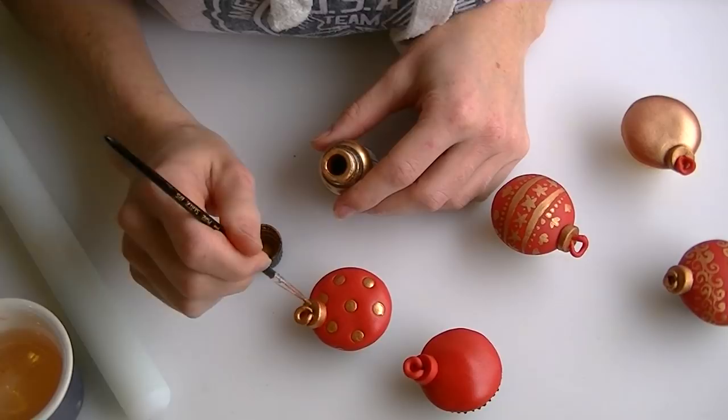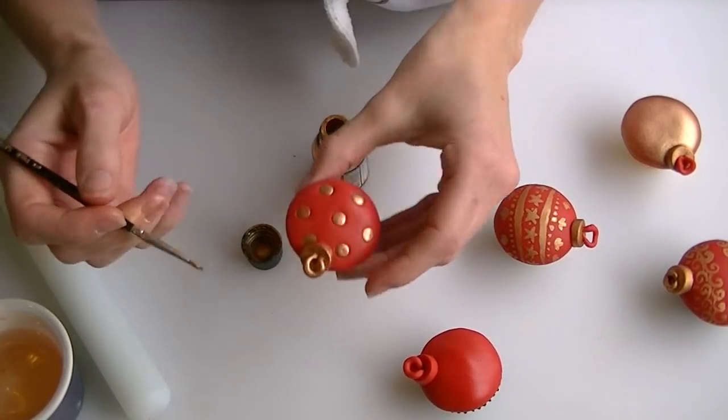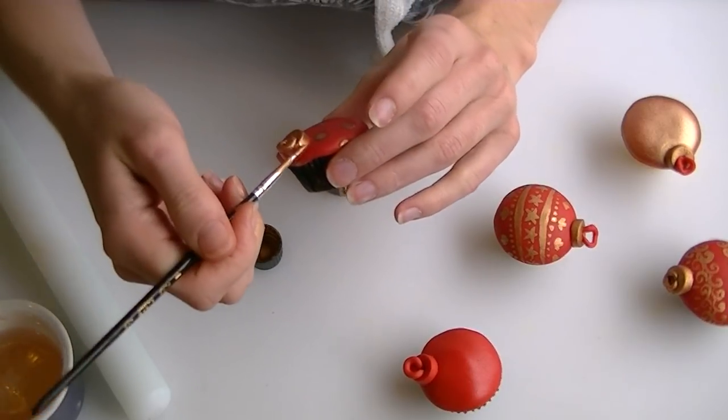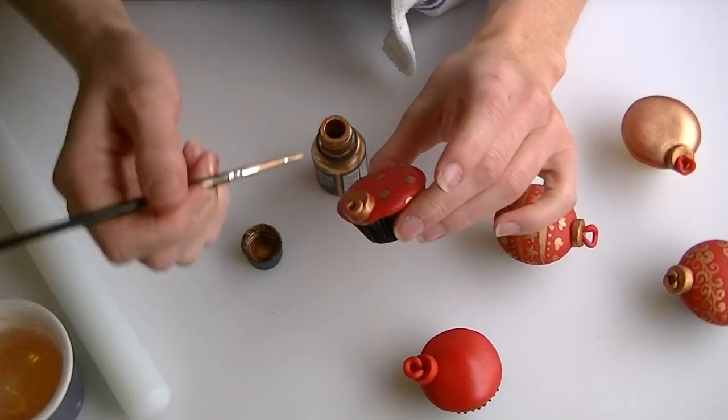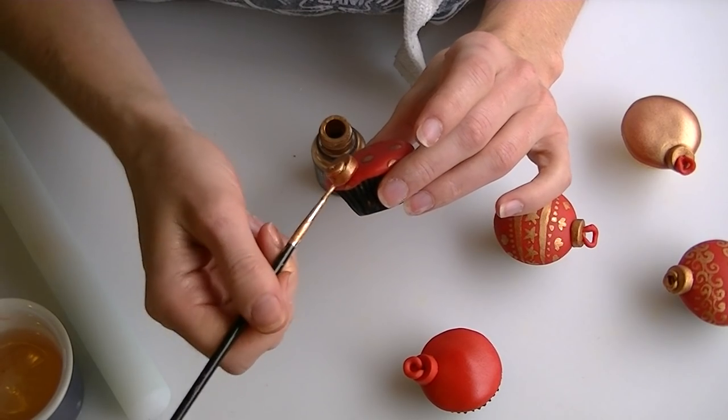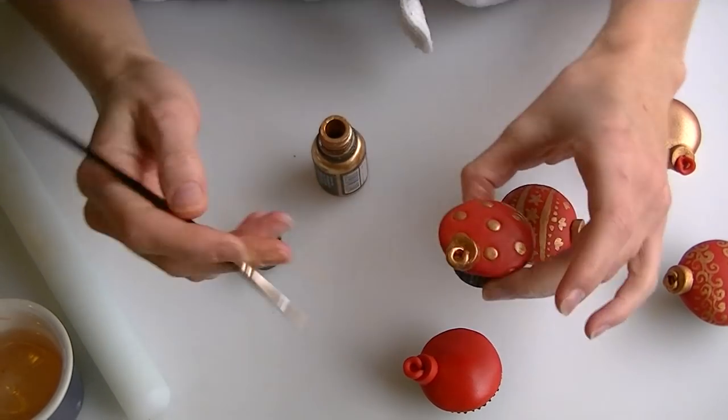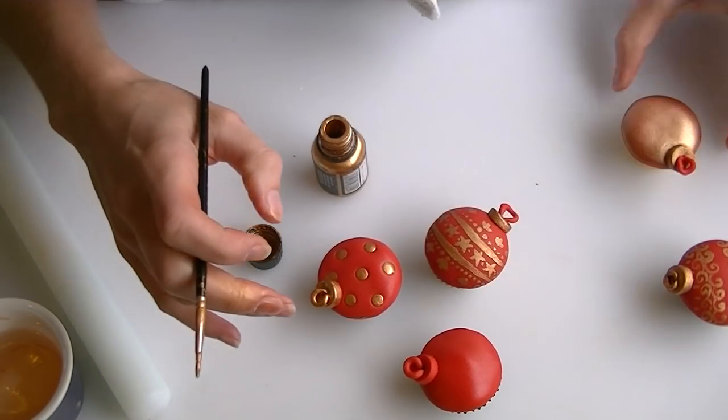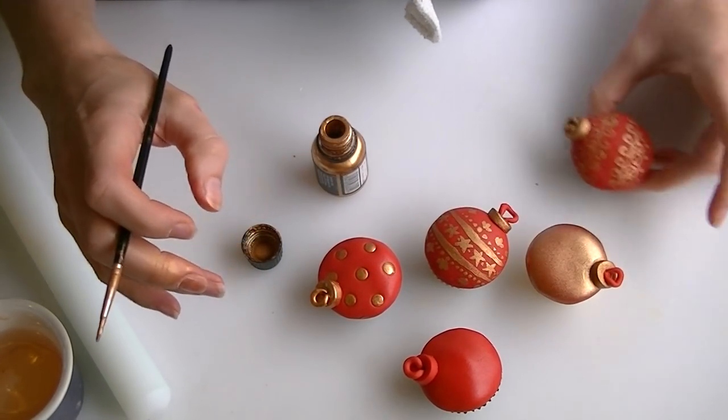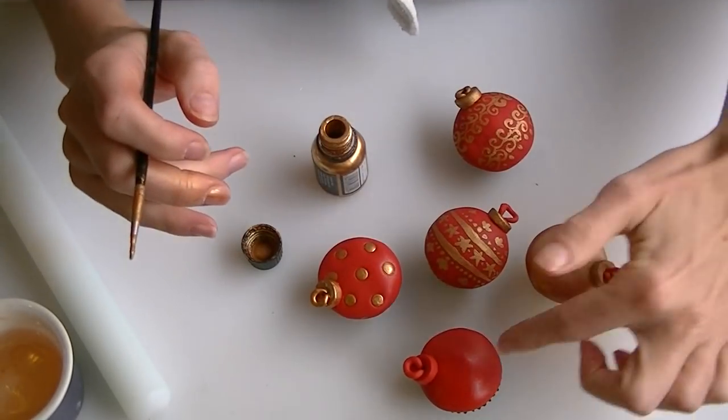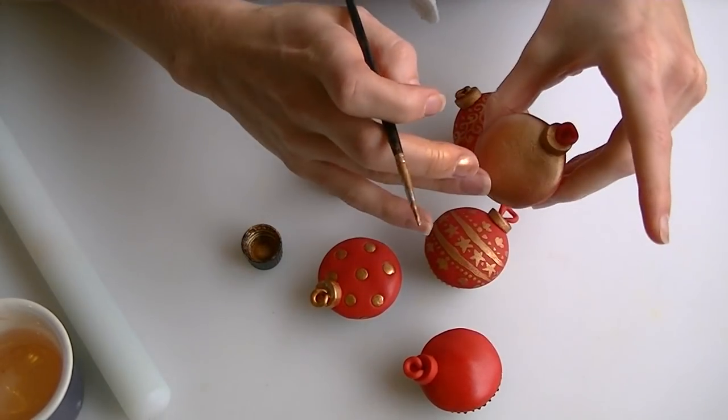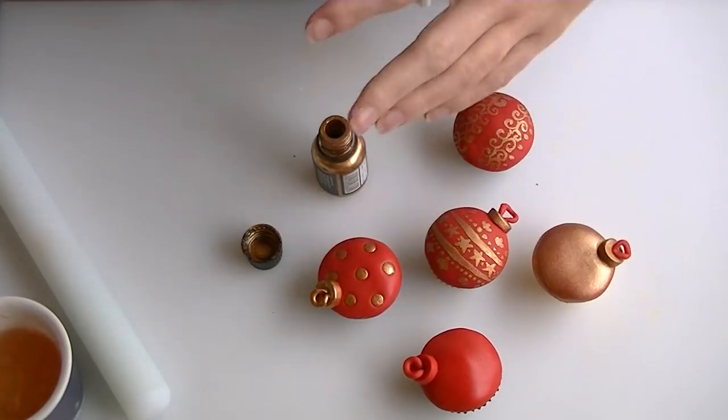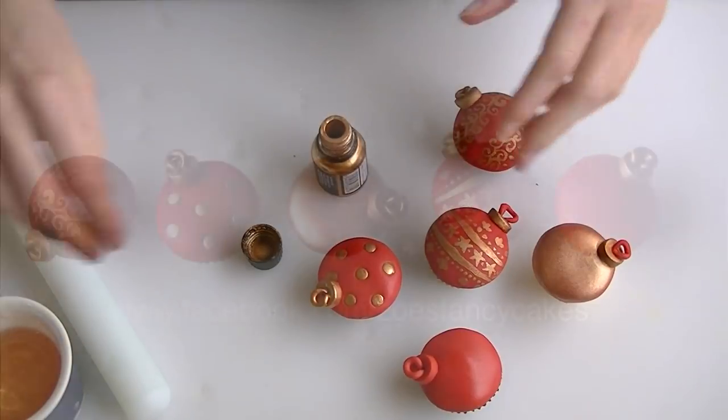And if you let yours dry it'll be a little bit easier to paint up than what this one is. And of course you don't have to paint them, you can just do them straight into the color that you want them to be. So that's one done. You'll see I've done them in a variety of different patterns. These are just painted on, and then it's nice to have some plain. This one I've just used a gold metallic spray for. So I'll finish painting these up and I'll show you a picture of those at the end.